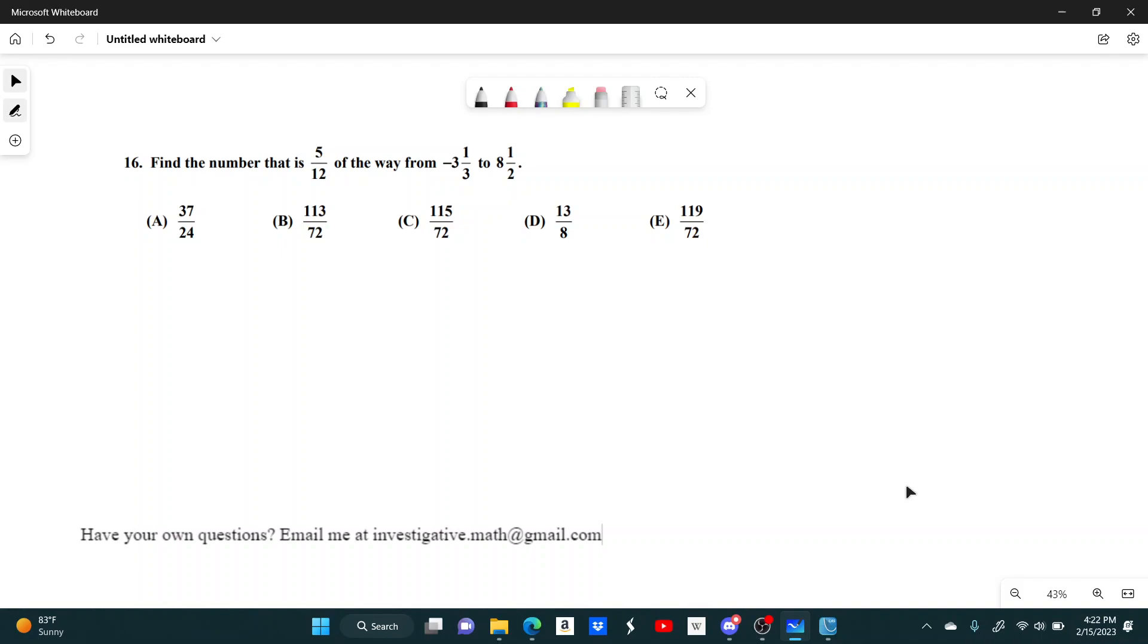To find this number, we have to start by finding the total distance between these two numbers. And then what we can say is, what's 5 twelfths of that distance? And then start here and move that distance to the right.